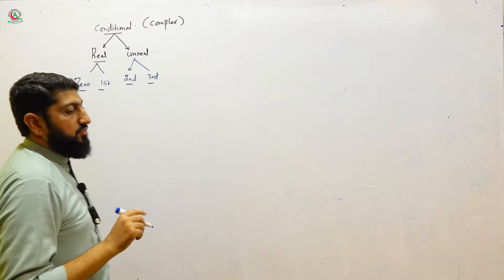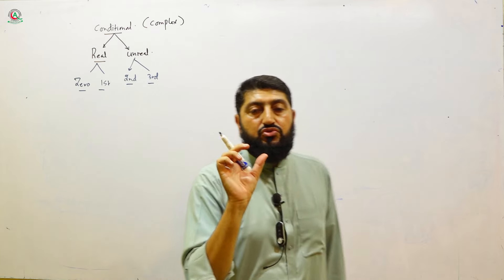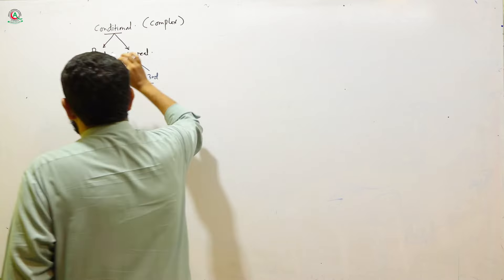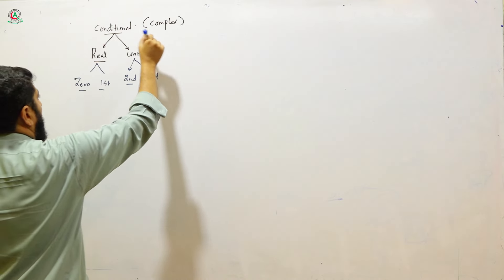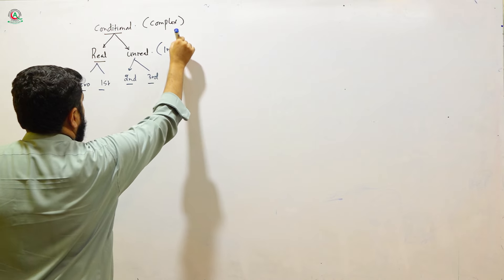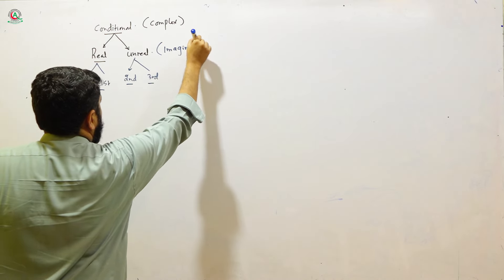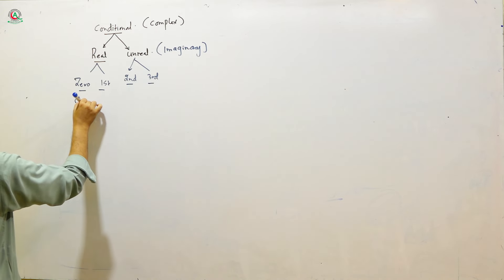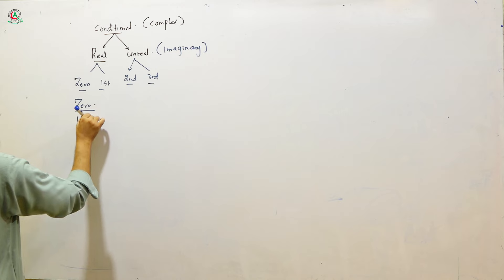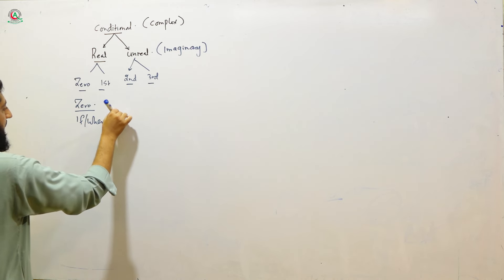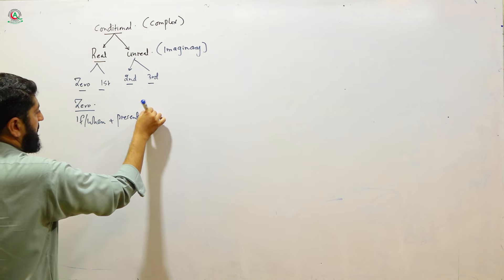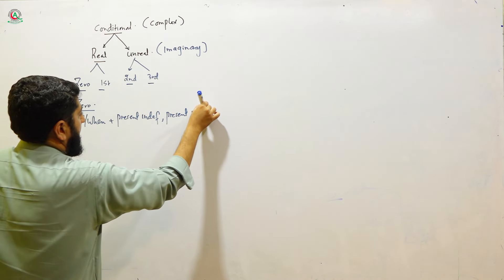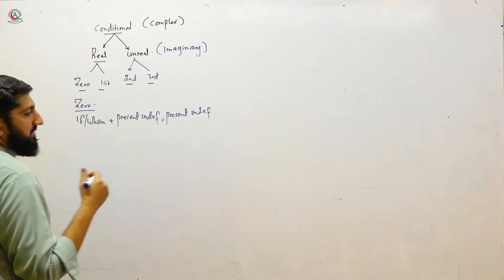The most important thing is the formula. If you understand the structure and formula, it will be easy. What is 'real'? That is what happens in our day-to-day life. What is 'unreal'? That is imaginary — hypothetical. For zero conditional, the structure and formula is: if + present indefinite, and the second clause is also present indefinite tense — also called present simple.